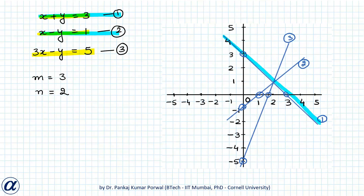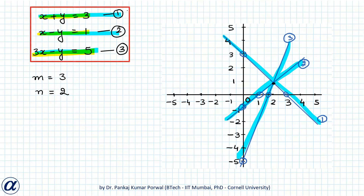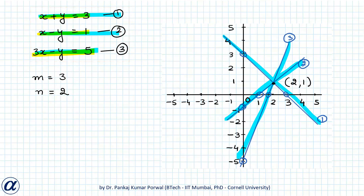Plotting these three lines in the 2D plane, equation 1 is line 1, equation 2 is line 2, and equation 3 is line 3. All three lines intersect at a common point, which satisfies all three equations. The coordinates of the common point are (2, 1), meaning x equals 2 and y equals 1 is the solution. Substituting into all three equations confirms they are all satisfied.